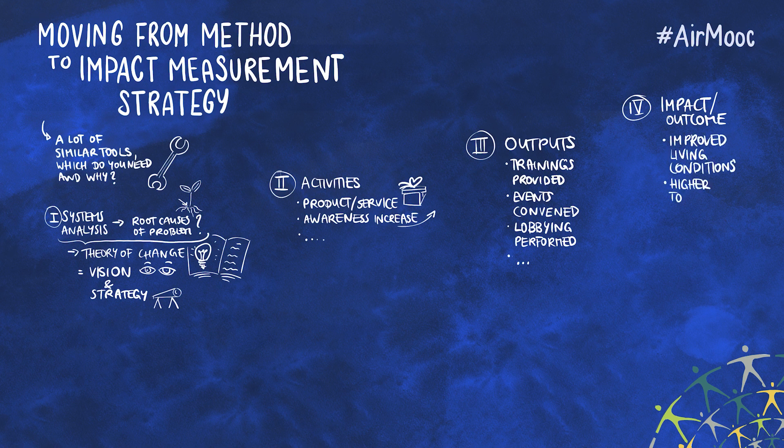This stage is sometimes referred to as impacts, but it could also be called attributable social outcomes — that is, improvements for the target group that can be related to the activities of an organization.